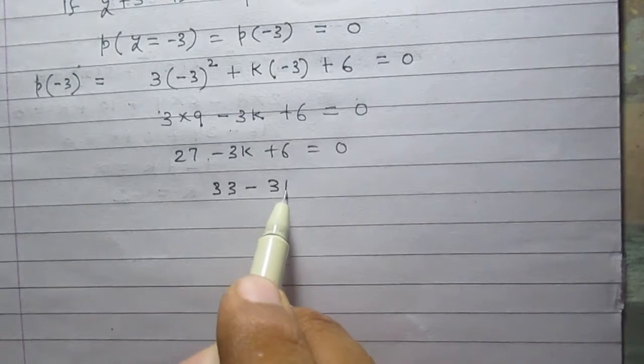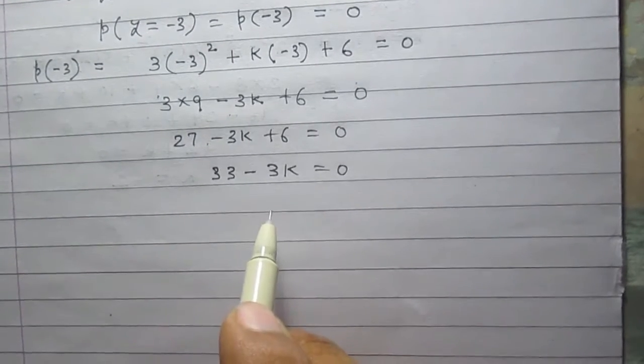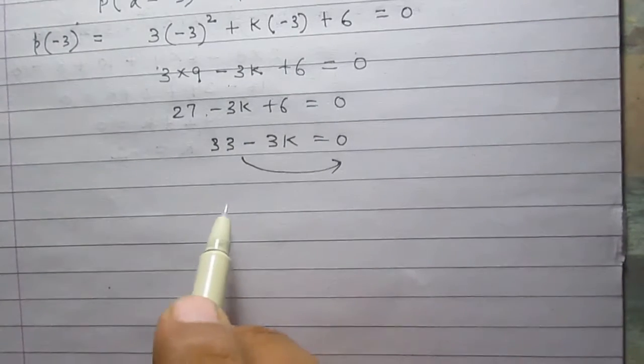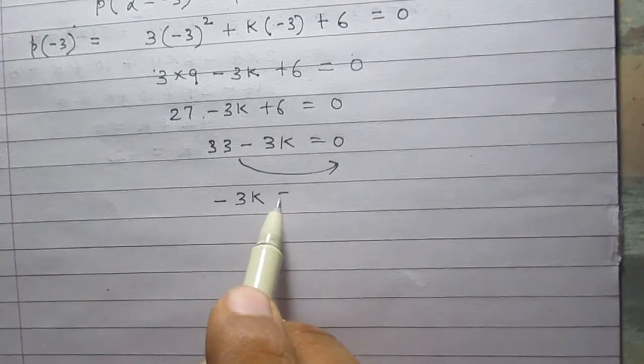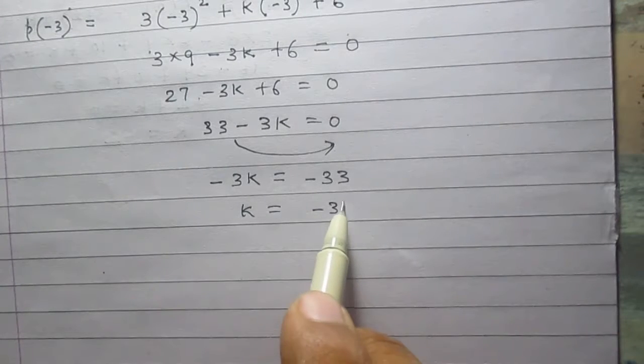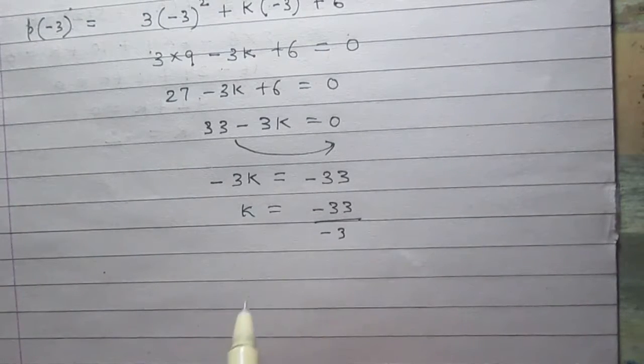So it is 33 minus 3k is equal to 0. On transposing 33 to the right hand side, we will get minus 3k is equal to minus 33, and k is equal to minus 33 divided by minus 3.